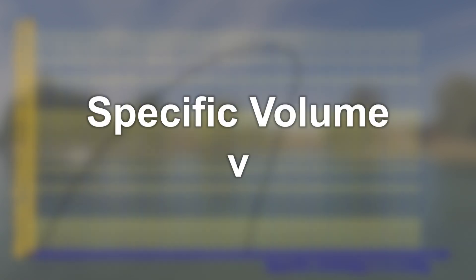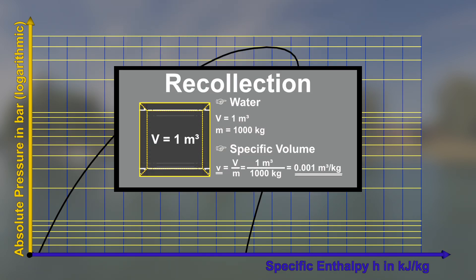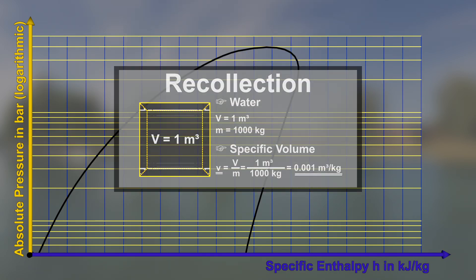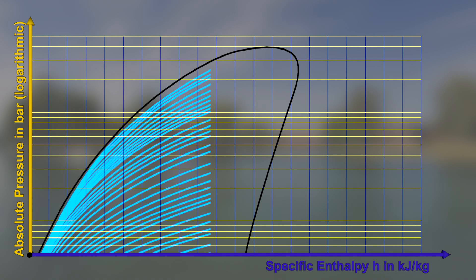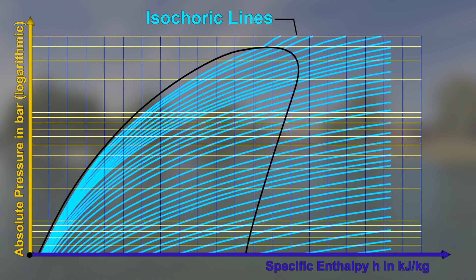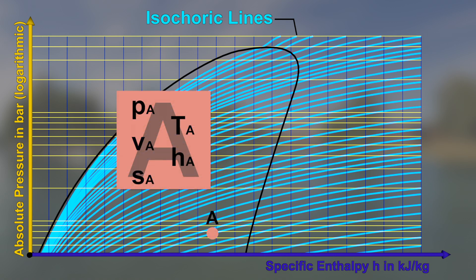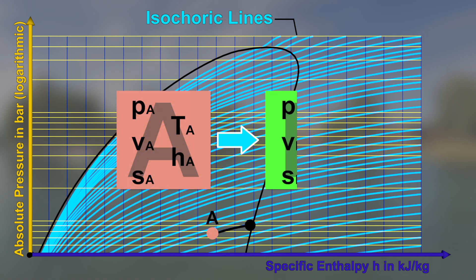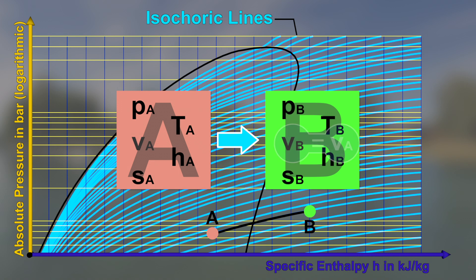In each point of the diagram, the fluid has a certain specific volume v, which is the volume per unit of mass of fluid. If points with the same specific volume are connected with each other, the isochoric lines become visible. If a state of a fluid changes from state A at constant specific volume v along an isochoric line to state B, we call it an isochoric change of state.